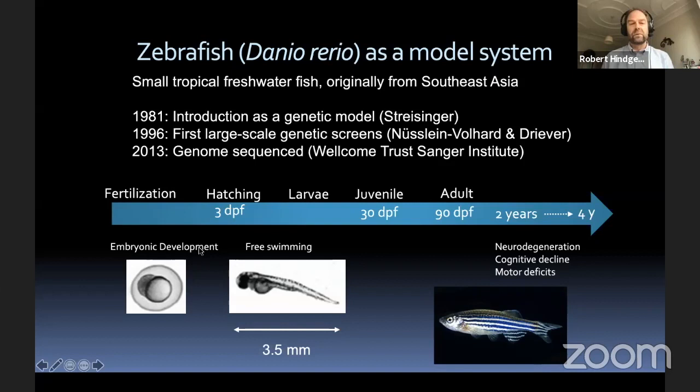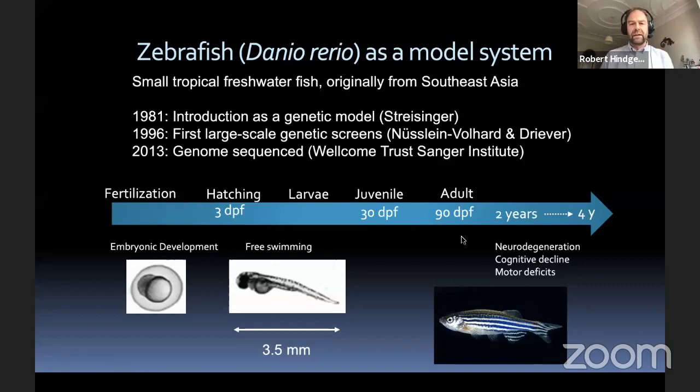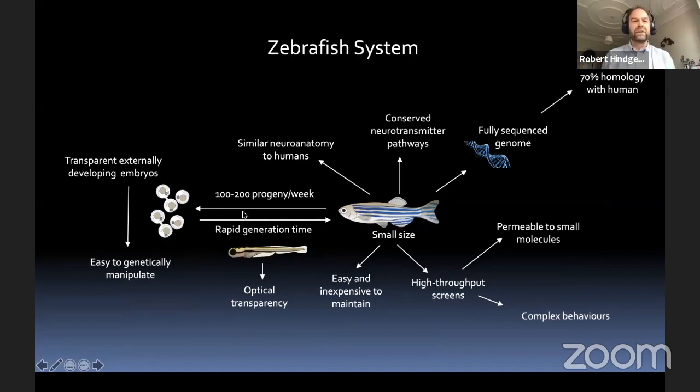In terms of development, zebrafish are very fast developing. From fertilization to hatching is only three days. At three days post-fertilization, larvae become free swimming — they're only about three and a half millimeters, so you can keep them in smaller spaces, but they already show quite a lot of important behaviors. With a month — 30 days post-fertilization — they're juveniles, and then about 90 days, they're adults. There's a very rapid generation time, and we get about 100 to 200 per week.